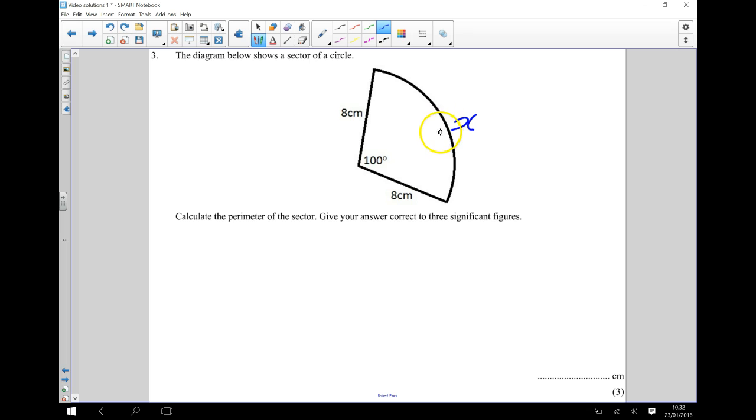Now, first of all, an arc length is part of a circle. So if this was a full circle, it would have a diameter of all the way across of 16. So I know my diameter is equal to 16.